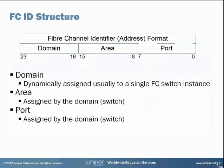The Fibre Channel ID is the same concept as an IP address. While an IP address has four octets, FCID has three octets. It is made up of domain, area, and port fields. All parameters are configured on SAN fabric devices.